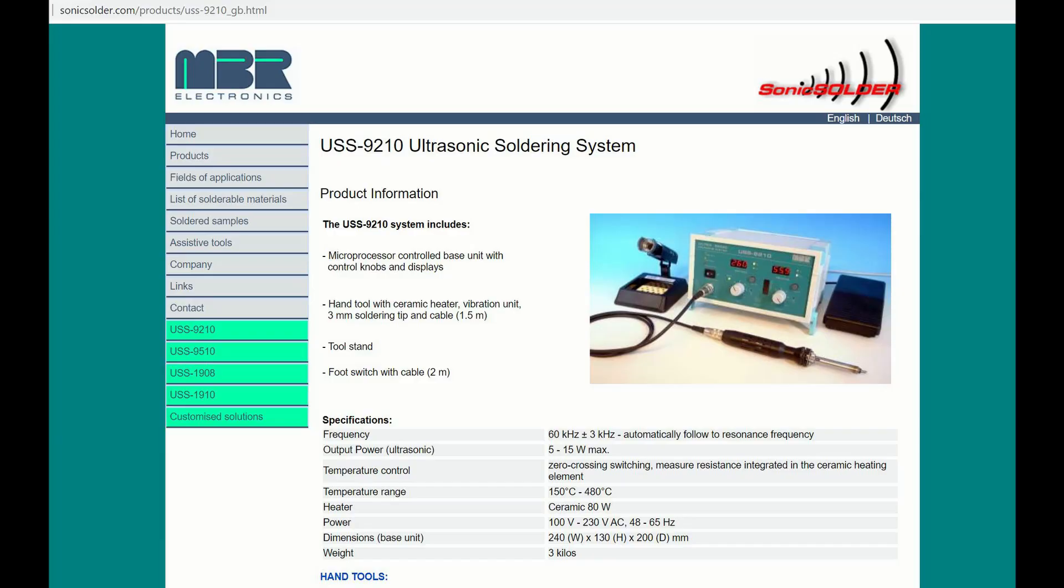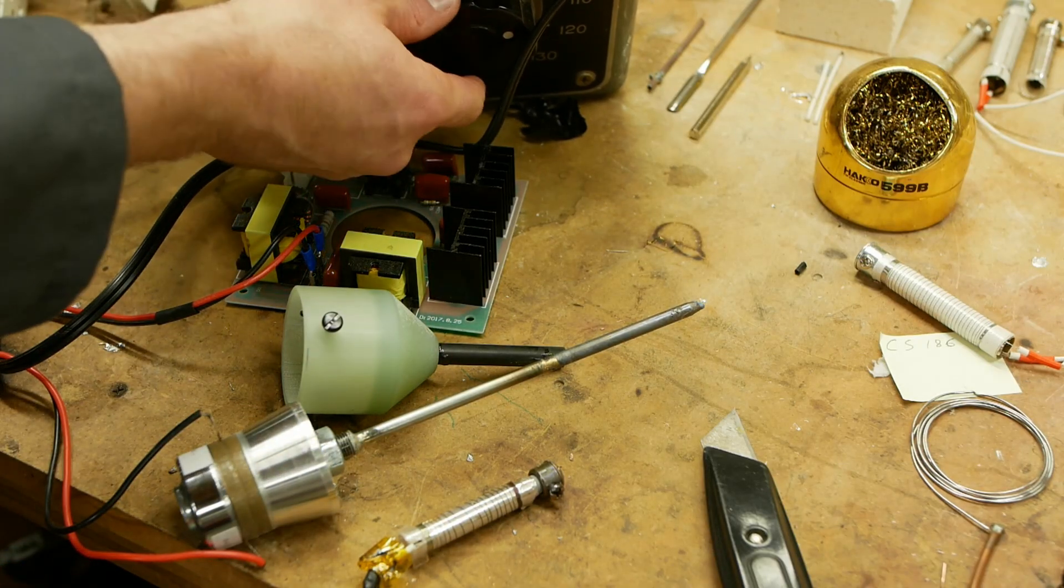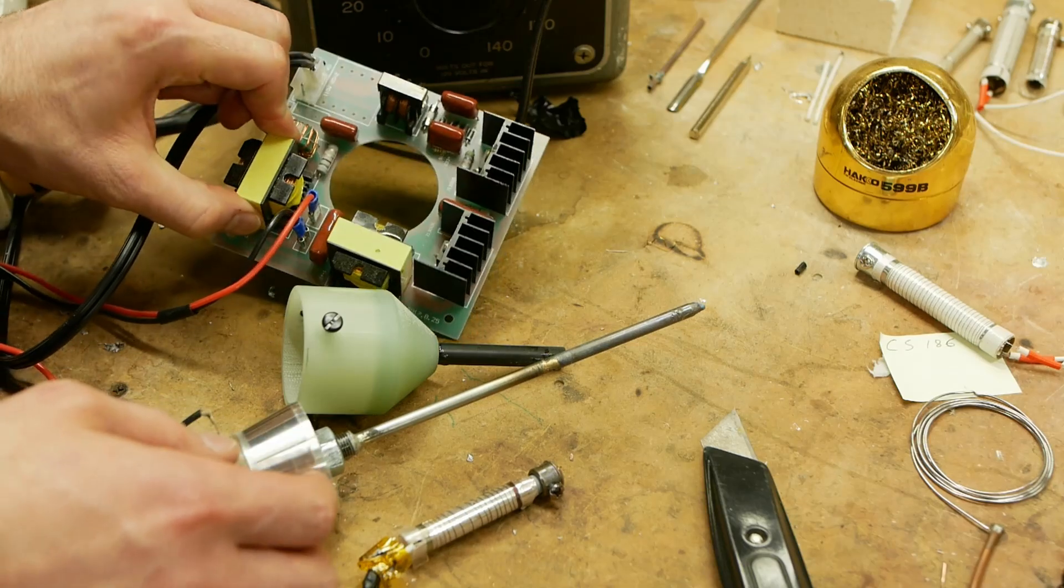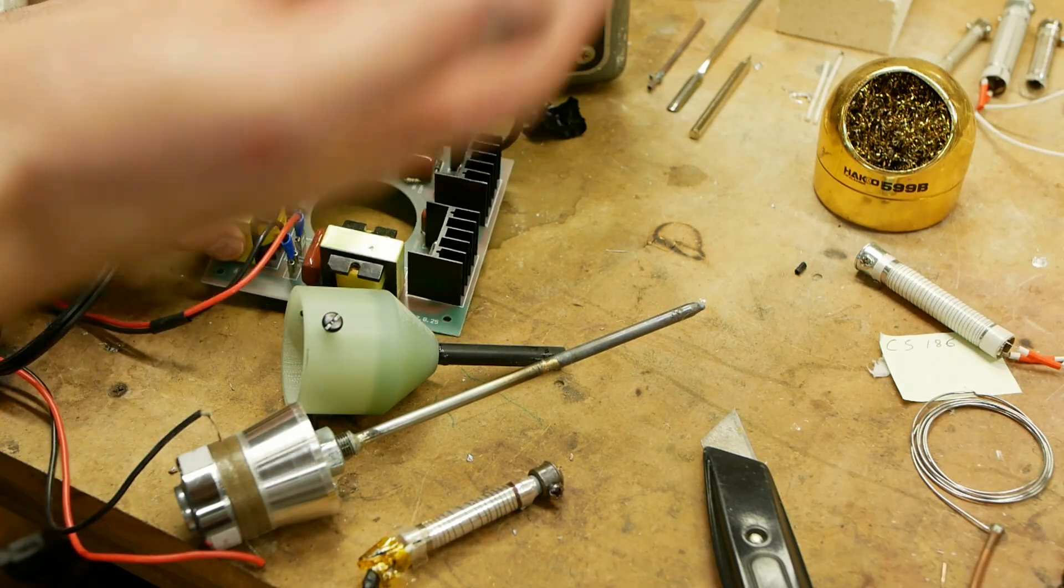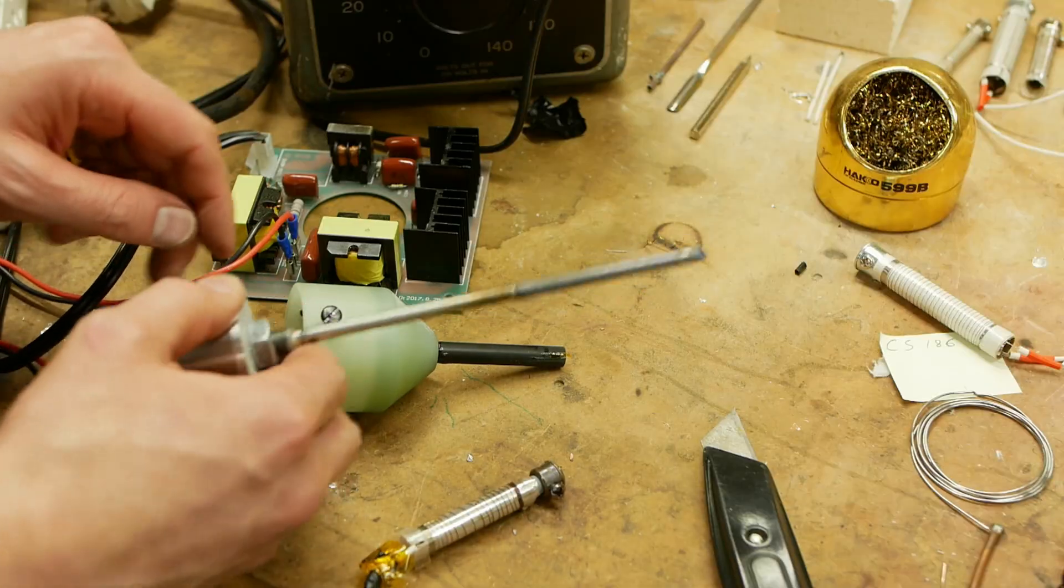And like I say, this is 60. So what I tried to do is use a variac to turn it down, but unfortunately the circuit doesn't oscillate if you get it below about 80 or 90 percent of line voltage. So it is running at close to the full 60 watts there.